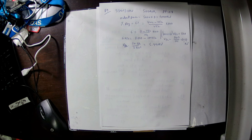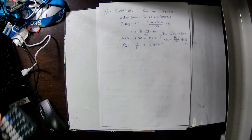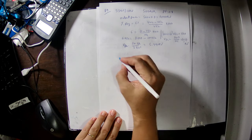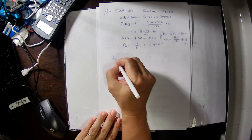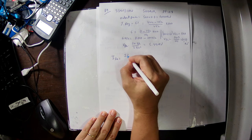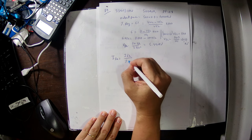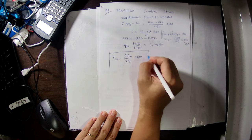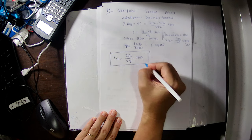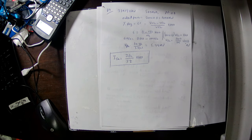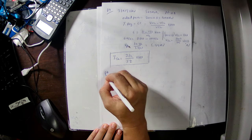We can also calculate the short circuit current. The equation is: I_SC equals full-load current divided by percentage impedance, multiplied by 100. We find the full-load current first, then divide by percentage impedance and multiply by 100.